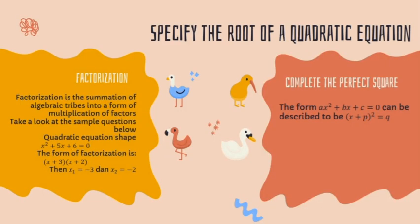Next, specifying the root of the quadratic equation. First, factorization. Factorization is the simplification of an algebraic trinomial into a form of multiplication of factors. Take a look at the sample question: x² + 5x + 6 = 0. To find the factors of the equation, we look for numbers which add up to 5 and multiply to give 6. The factorization form is (x + 3)(x + 2), so x₁ = −3 and x₂ = −2.